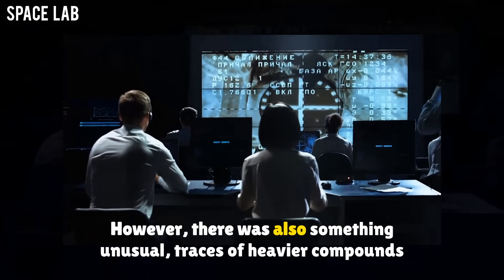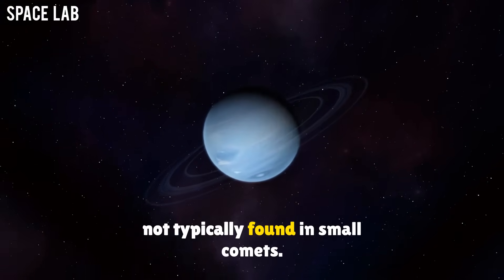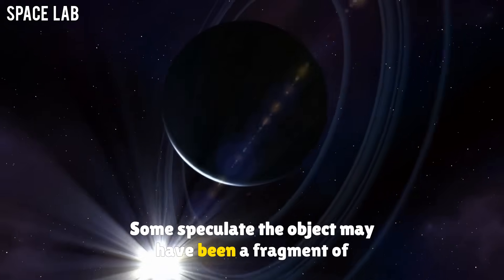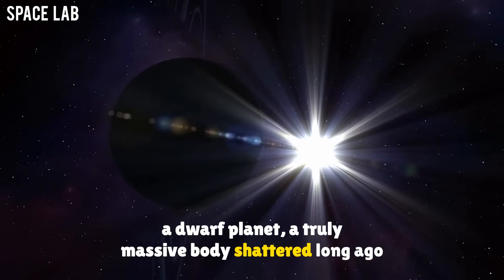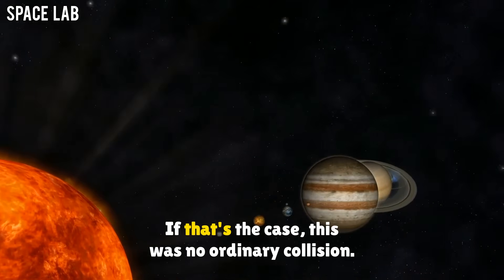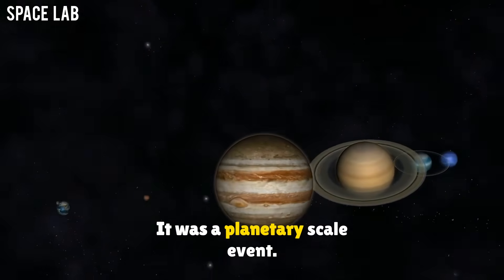However, there was also something unusual. Traces of heavier compounds not typically found in small comets. Some speculate the object may have been a fragment of a dwarf planet, a truly massive body shattered long ago and now drifting through space. If that's the case, this was no ordinary collision. It was a planetary-scale event.